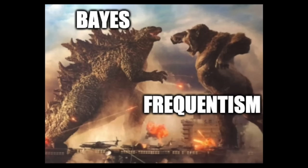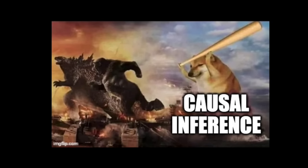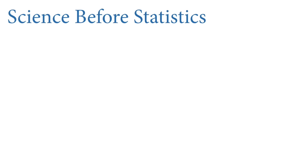Often in statistics, especially in Bayesian statistics courses, there's lots of discussion of the differences between Bayesian inference and frequentism. We're not going to talk about that at all in this course. The statistics wars are over for the most part — they're just a thing that boomer statisticians talk about. We're much more interested in how we justify our statistical procedures, whether they're Bayesian or not, and that leads us to focus more on a field called causal inference. It's a field that puts science before statistics.